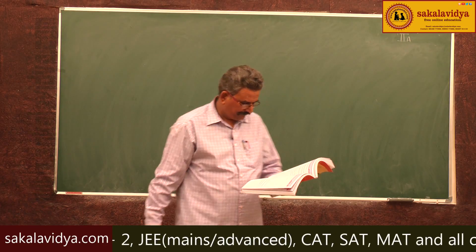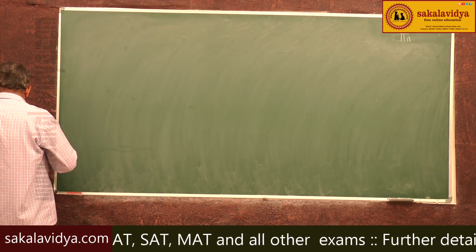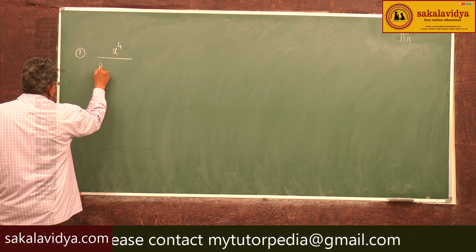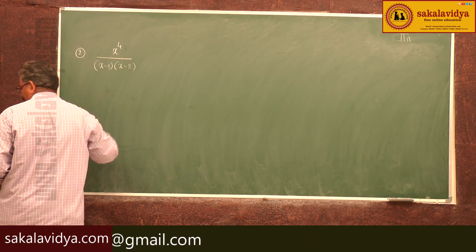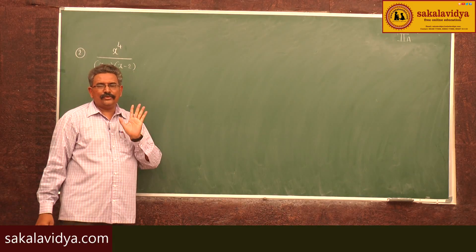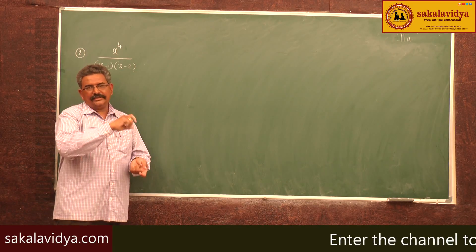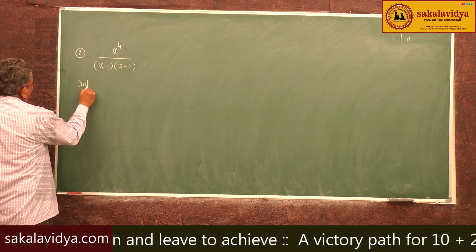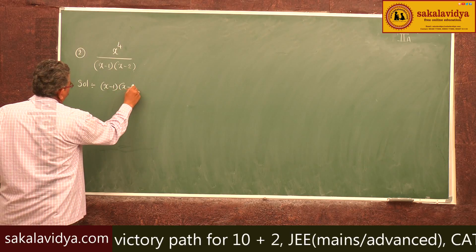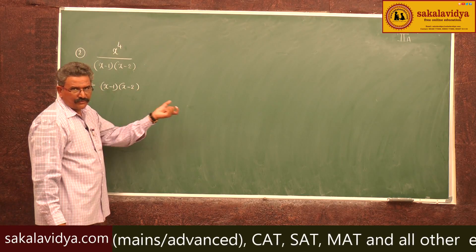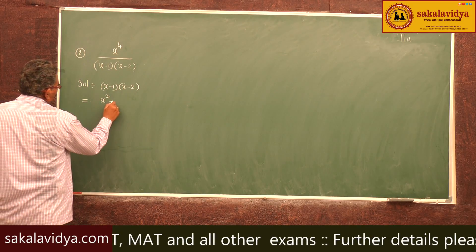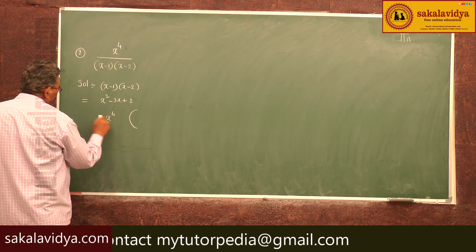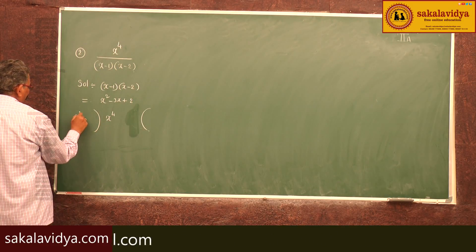Next problem on the same model: resolve x⁴ / [(x-1)(x-2)] into partial fractions. This is an improper fraction, so do not directly apply partial fractions. First we must convert it into a proper fraction. Now (x-1)(x-2) multiplied out gives a quadratic expression: x² - 3x + 2. Let us divide x⁴ by x² - 3x + 2.